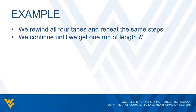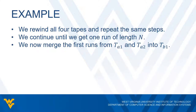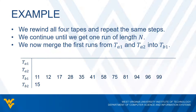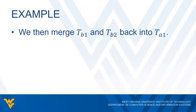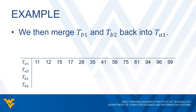Continuing our example: we take the first runs from TA1 and TA2, merge those sorted lists, and store everything into TB1. The leftover 15 from the second run in TA1 gets stored into TB2. Finally, we merge everything from TB1 and TB2 back into TA1. Even though one list has just one item, we merge all that into a final sorted list, so TA1 ends up with the complete sorted list.